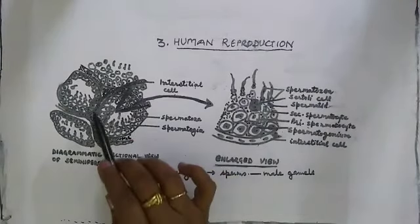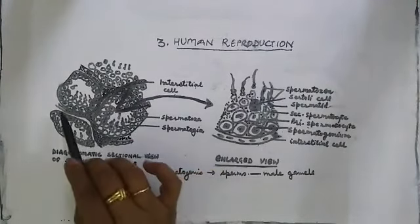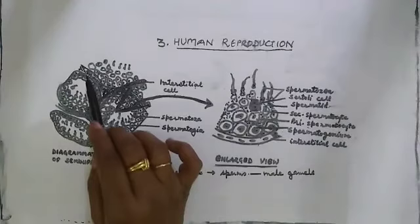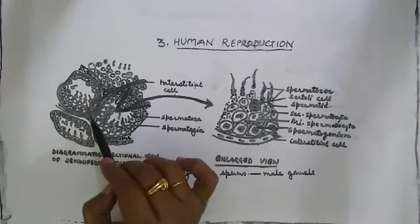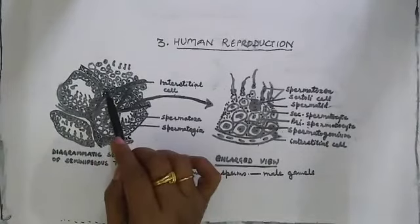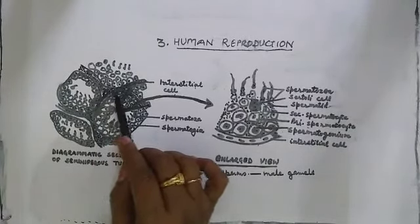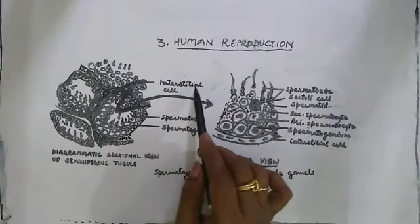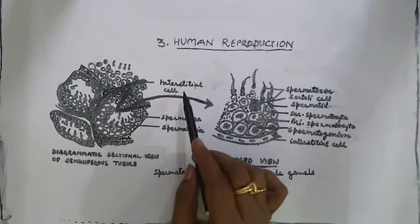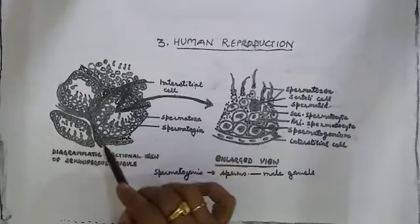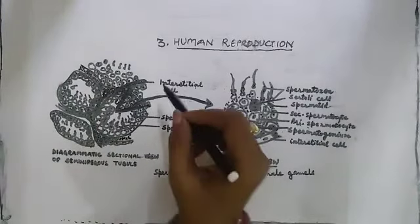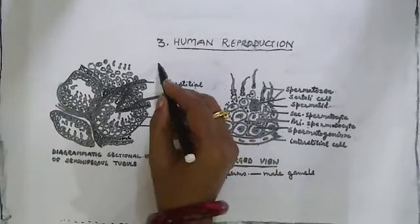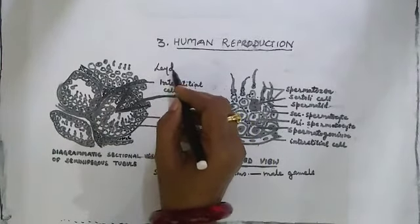The seminiferous tubule is surrounded by interstitial spaces. The tubules have some space and this space is termed as interstitial space. This interstitial space contains interstitial cells as well as blood vessels. The interstitial cell is also termed as Leydig cells.